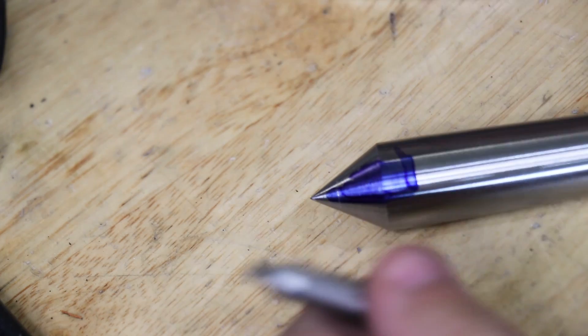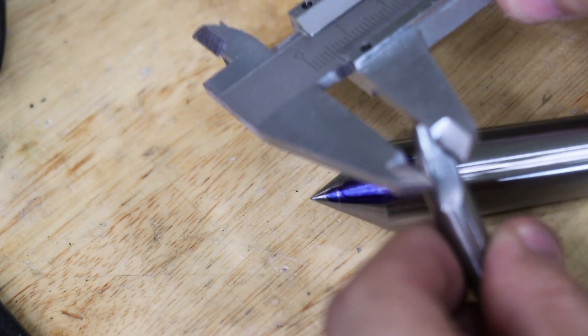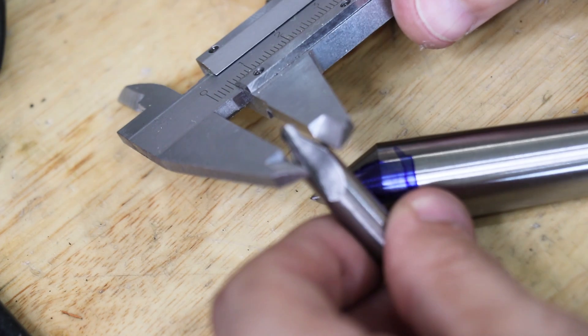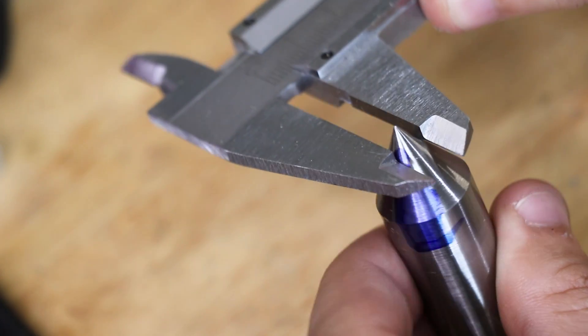Typically, I might use a number four center drill to drill out the center. So what I'll do is I'll measure the diameter on the center drill, and I'll mark it out on the center.